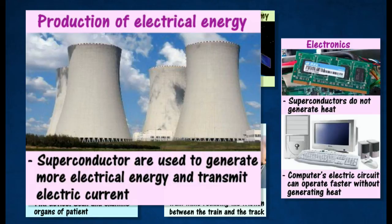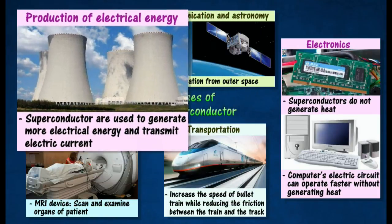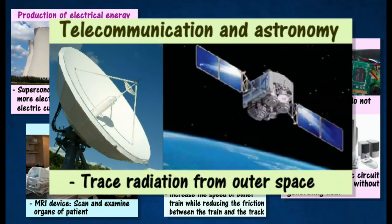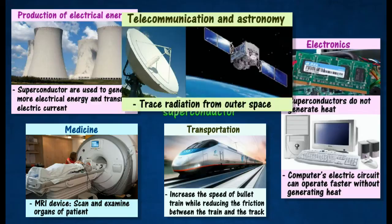As superconductors have no resistance to the flow of electric current, they are used to transmit electric current. Superconductors are also used to detect and trace radiation from outer space which cannot be traced by normal equipment.